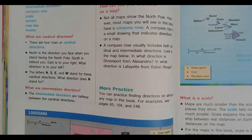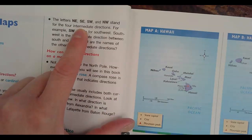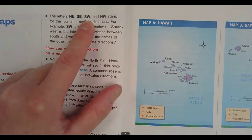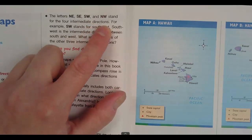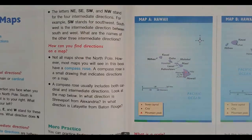What are intermediate directions? The intermediate directions are halfway between the cardinal directions. Halfway between the cardinal directions are NE (northeast), SE (southeast), SW (southwest), and NW (northwest). For example, SW is southwest — southwest is the intermediate direction between south and west.